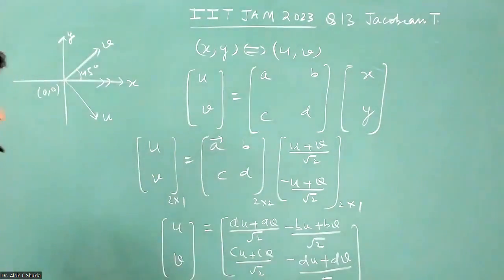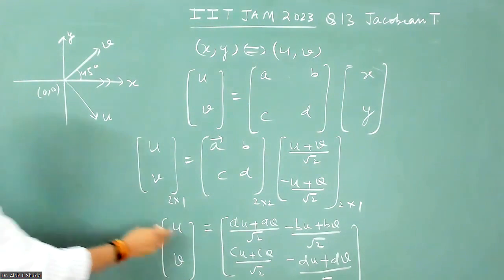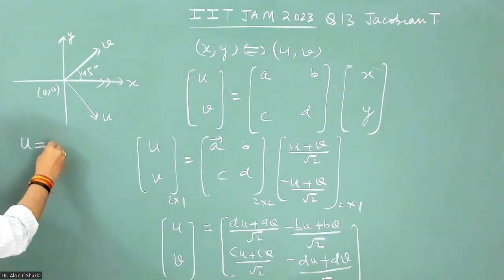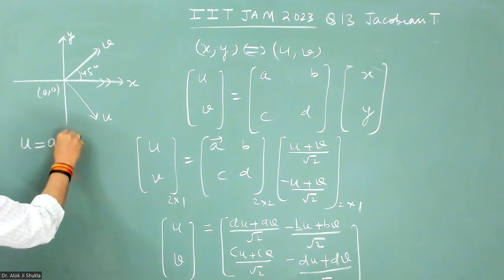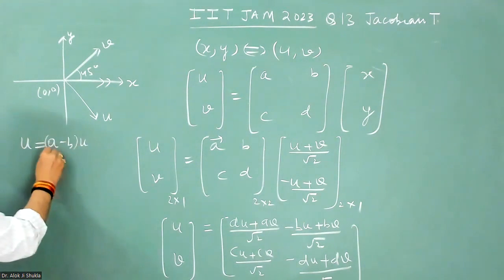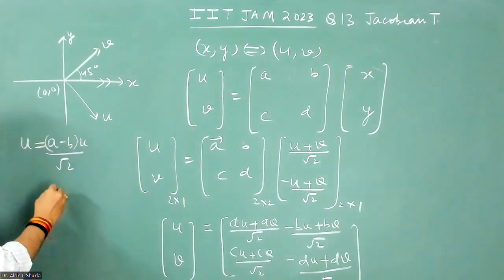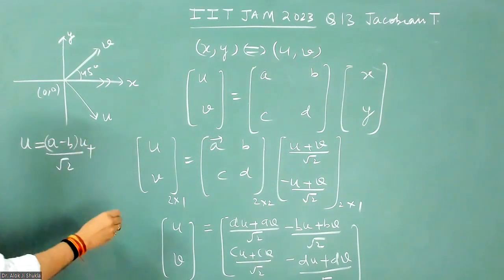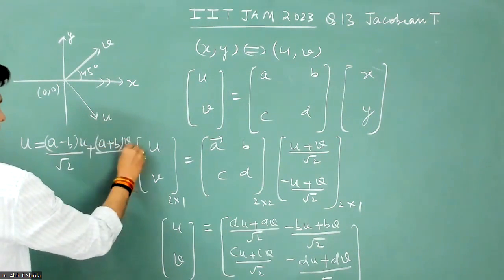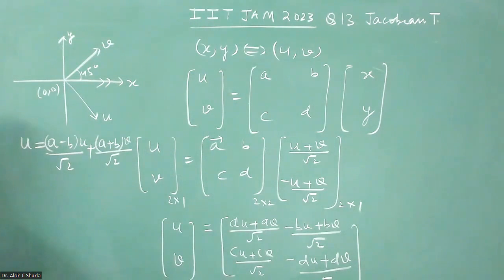So when you compare what you get, you get it like this: u is equal to what? So u is equal to a minus b u by under root two, and plus a plus b v by under root two.